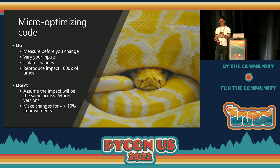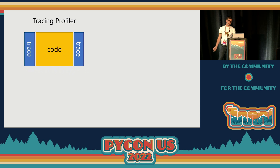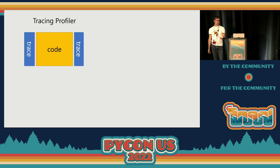Also don't assume that the impact you're measuring will be the same across minor Python versions. The stuff I'm showing today is against Python 3.10, and we've been testing it against 3.11 alpha 7 as well — it's all still relevant. If you see a performance gain of under 10%, generally don't bother, as a lot of that is noise.